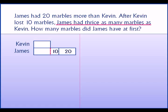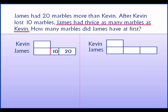So the after condition is: James had thrice as many marbles as Kevin. The diagram shows the model diagrams for the after condition. Looking at the picture for the before condition, we know that this is one unit because it is equal to what Kevin has, and we take that as a reference — the new one unit.